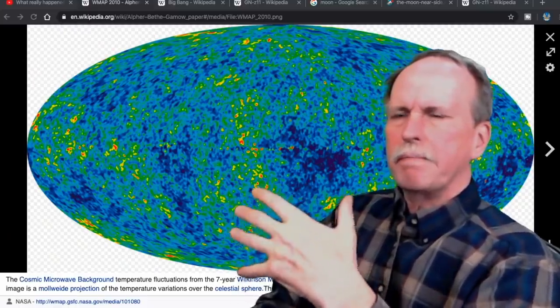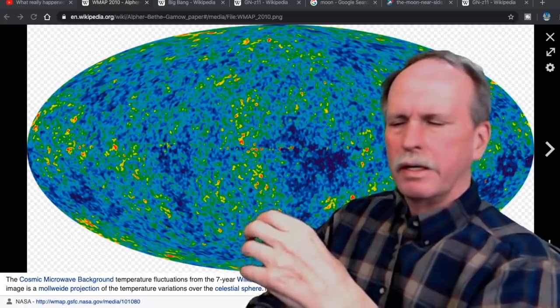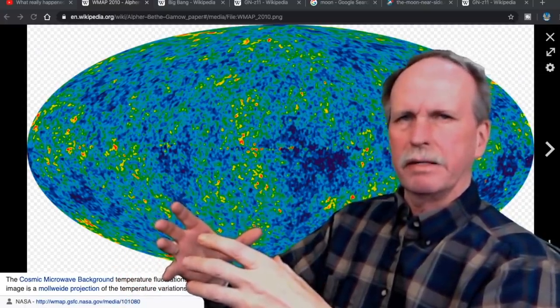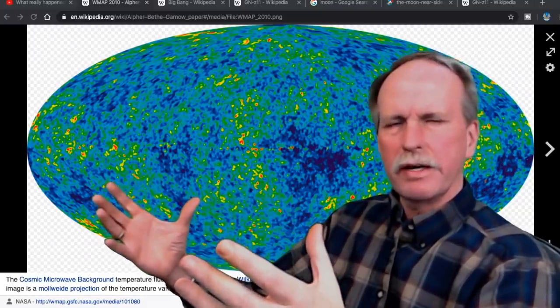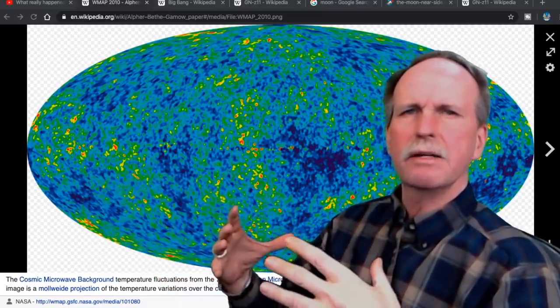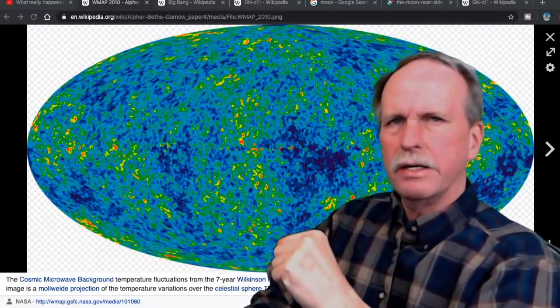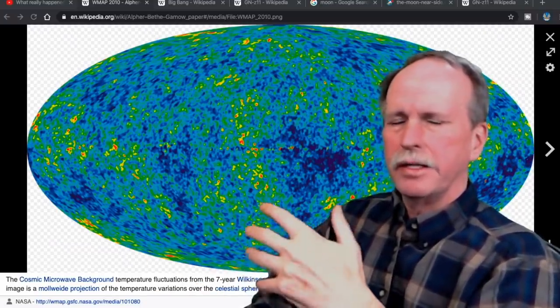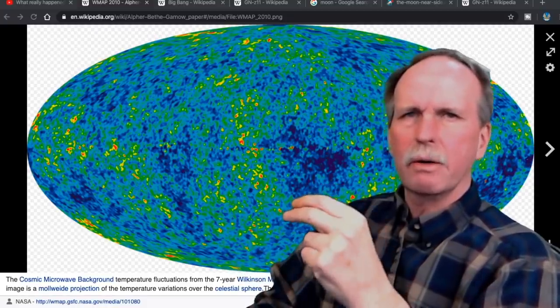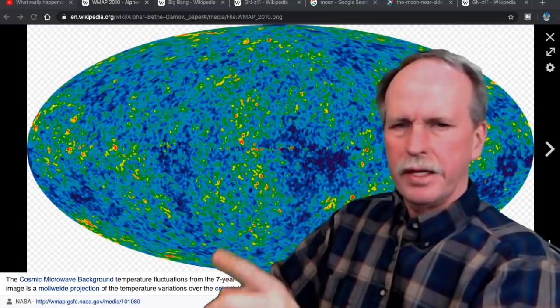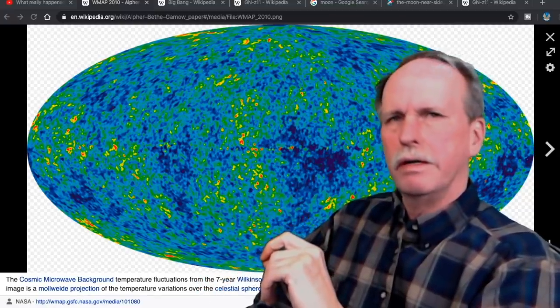Now, when the Big Bang occurred, heat was released. That heat was in the infrared band. As it expands away from us, it redshifts down to the microwave band. And what we're looking at here is a map of the universe. And this is called the background microwave radiation. It is present everywhere. This is the echo of the Big Bang.